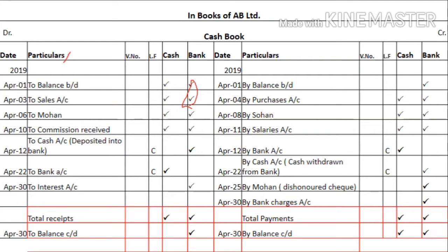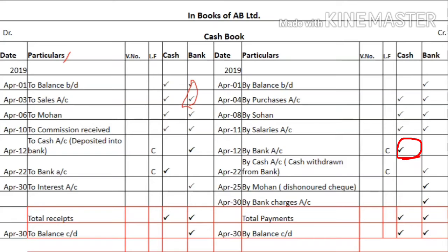When you deposit cash into the bank, your bank balance increases so the bank is debited — you write the amount in the bank column with particulars 'To Cash Account'. On the credit side you write the same amount in the cash column with particulars 'By Bank Account', because cash balance decreases. In the ledger folio column you write 'C', which represents contra entries.